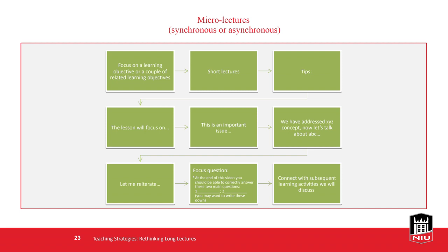When thinking about micro lectures, focus on the learning objective. Some tips: be deliberate when speaking to students — say 'this lesson will focus on X, Y, Z.' Key phrases help them get their mind in the framework of what you're focusing on. Statements like 'this is an important issue' help students know this is important and that they really need to make sure they understand it.